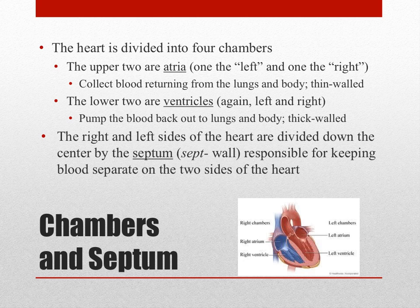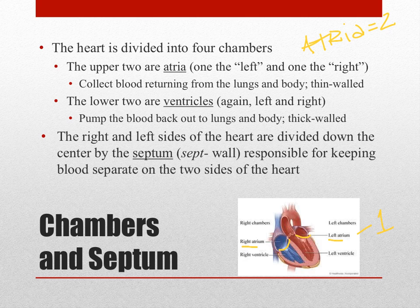The heart itself is divided into four chambers, discussed in terms of top/bottom and left/right. The upper two chambers are the right atrium and the left atrium — together called the atria. The lower two chambers are called the ventricles: a right ventricle and a left ventricle. The heart is labeled as though it were in the person's body, so the right atrium appears on your left field of view — left and right appear to be backwards when you look at it.